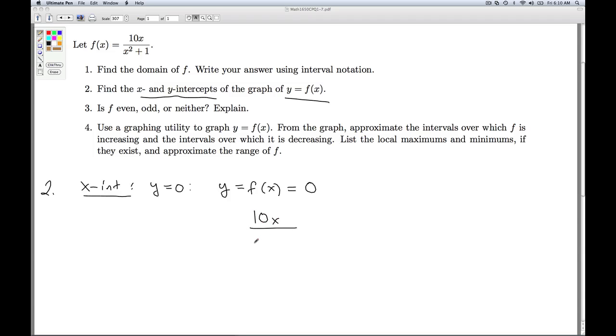So I get 10x divided by x squared plus 1 equals 0. And I can simplify this equation by multiplying both sides by x squared plus 1. On the left-hand side, the denominator cancels out, and I get 10x equals 0. Dividing both sides by 10, I get x equals 0.